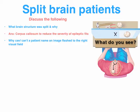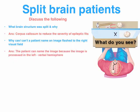Let's start with the right visual field. Two things you need to do: firstly, make it abundantly clear that the patient can name the image. Then justify that by identifying the structure involved — you'll say because the image is processed in the left verbal hemisphere, underlining left, underlining verbal.